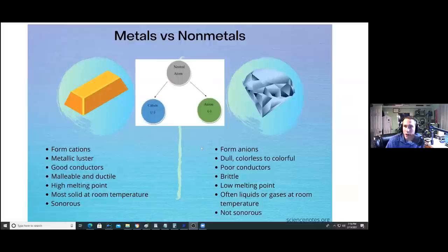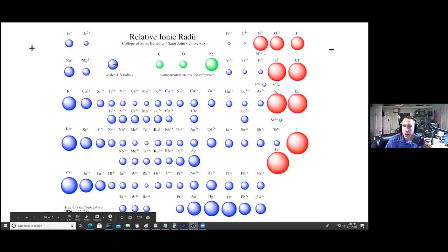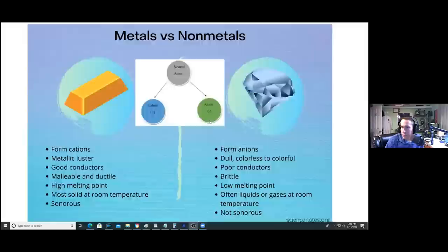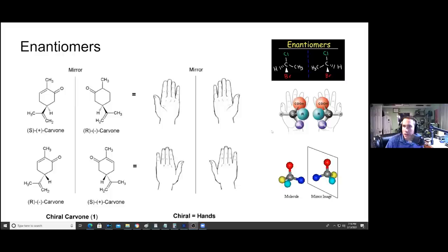Metals versus non-metals. Non-metals form anions. They're dull, colorless to colorful. They're poor conductors. They're brittle. They have a low melting point, often liquids or gases at room temperature and not sonorous. A lot of these things are actually gases: oxygen, nitrogen, chlorine, fluorine, hydrogen and helium are all really gases. Helium's the smallest atom that there is size-wise, but they all have different interactions with other materials. They all kind of fit together in different ways based on their size. If you think of spheres and sphere packing a little bit, these atoms we have in our periodic table of chemical elements combine to form molecules.